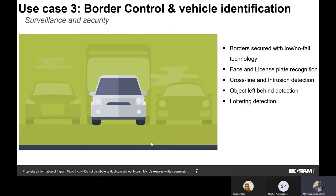The third use case is border control and vehicle identification — the machine's ability to detect the car model, type, and color, and recognize its owner or riders. The system can also generate analytics on how many vehicles entered through a gate, which was the busiest day in the week or month, and the number of cars.